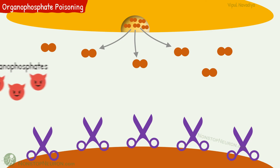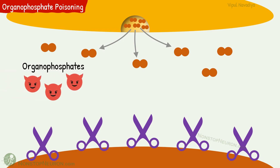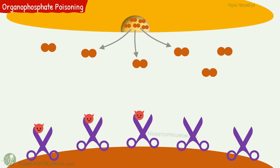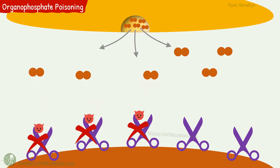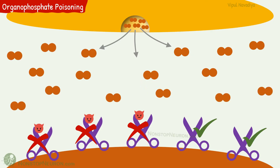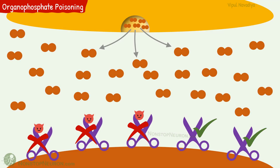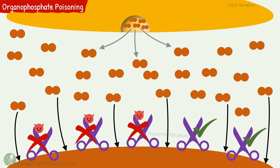Now let's see what happens in organophosphate poisoning. Organophosphates occupy the acetylcholine site of the enzyme, so acetylcholine can no longer bind here and these enzymes become useless. At present, we have only a reduced number of active enzymes. Due to the reduced number of active enzymes, degradation of acetylcholine is decreased, so its concentration in the cleft increases. This results in over-activation of receptors on the postsynaptic membranes, which produces the symptoms of poisoning.